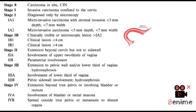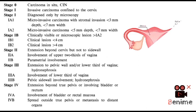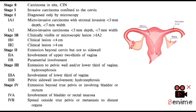Stage 4. Stage 4a: cancer has spread to adjacent organs, such as the bladder or rectum. Stage 4b: distant metastasis, such as spread to the lungs, liver, bones, or distant lymph nodes.